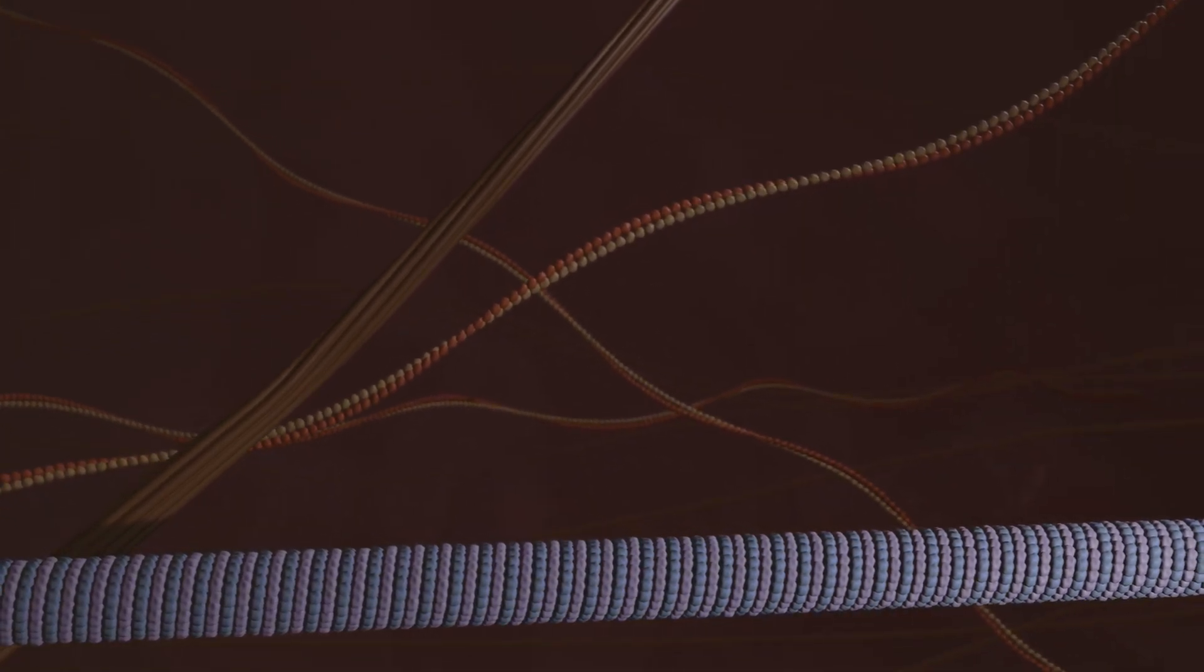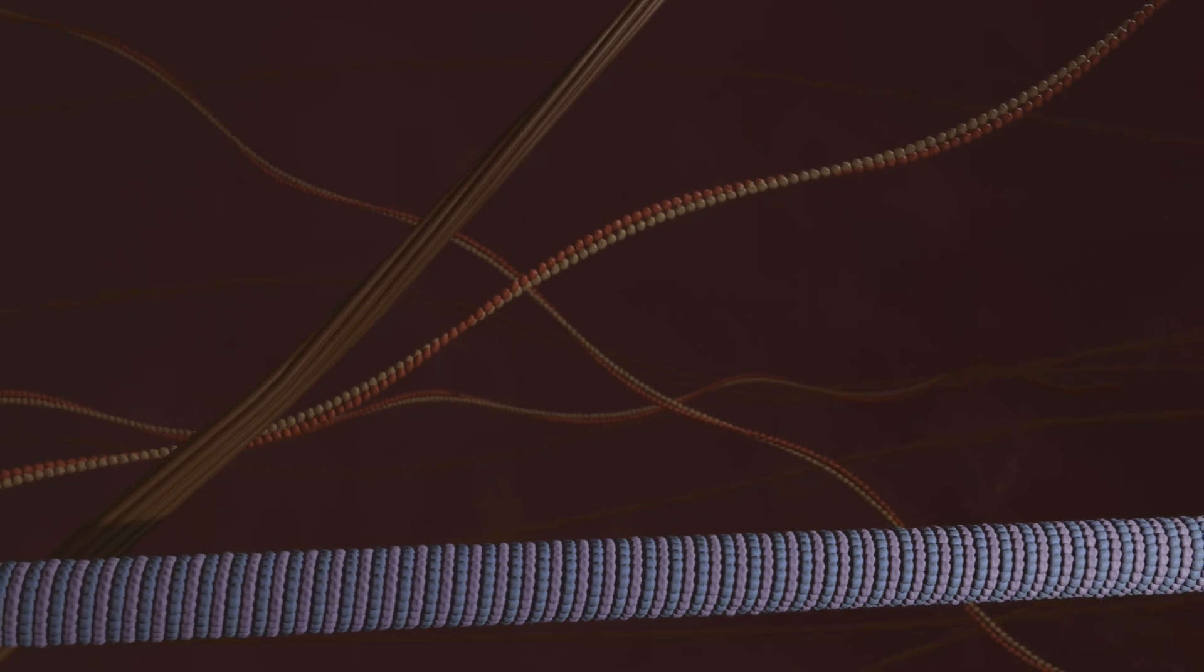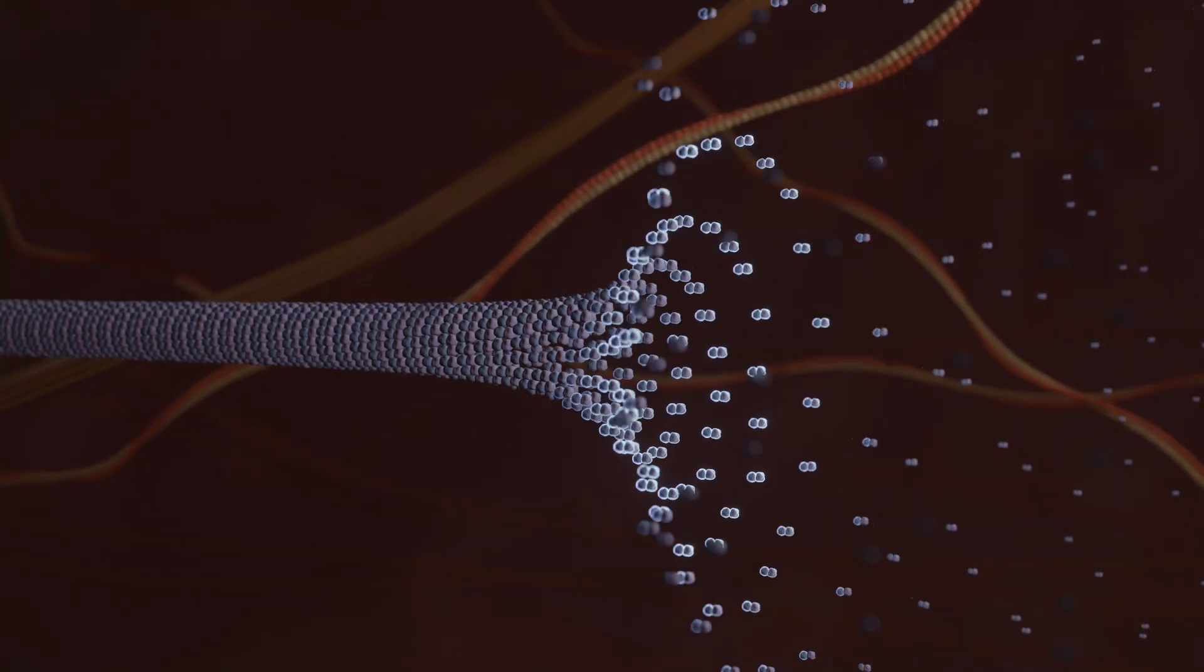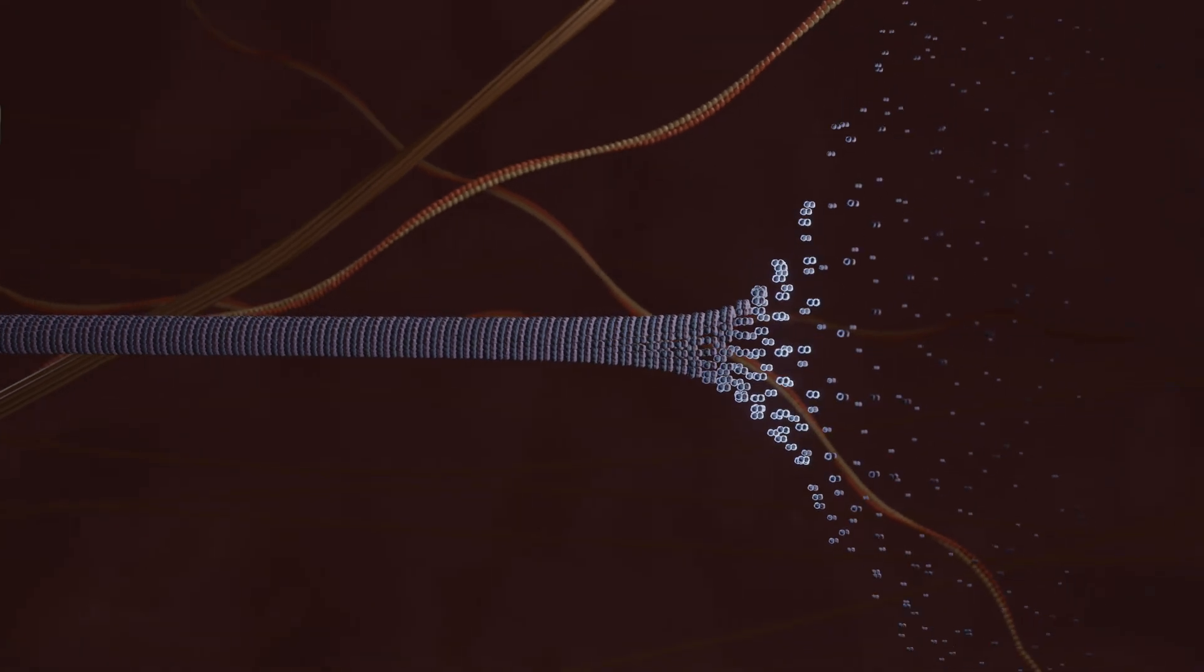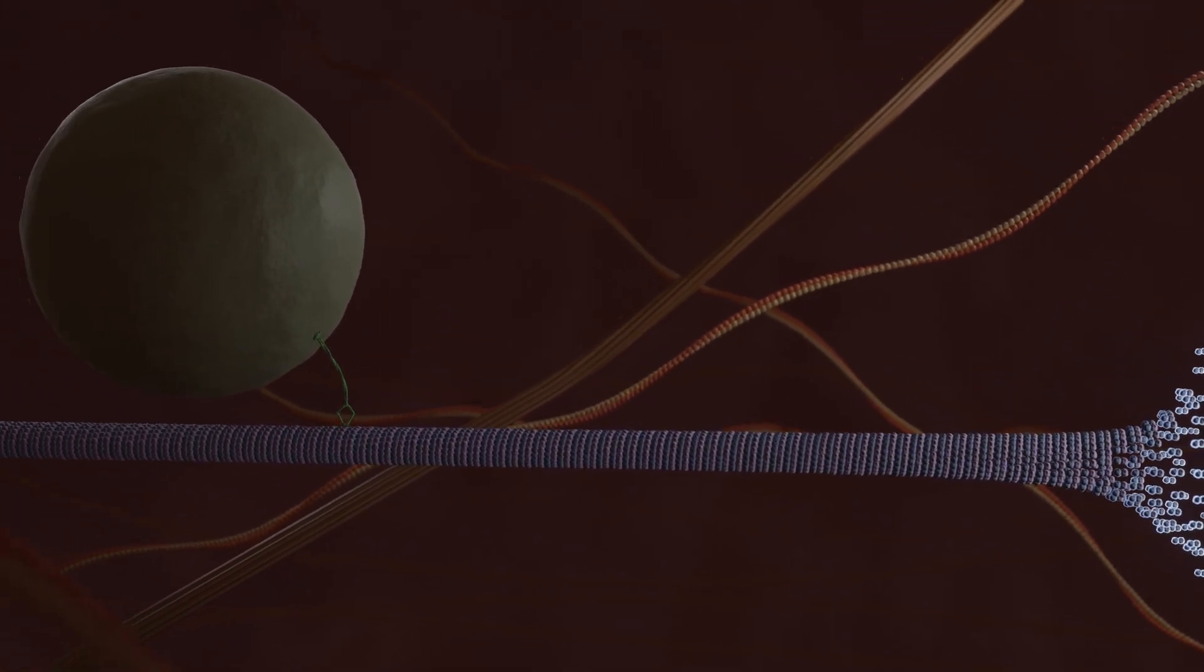In addition, the vesicles reach their destination with the help of the cytoskeleton. The actin filaments and microtubules in particular are subject to continuous assembly and disassembly processes.